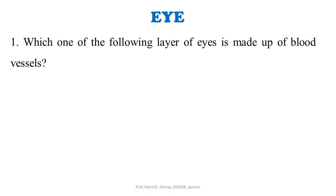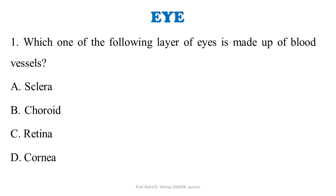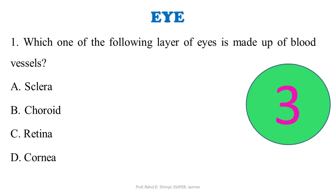The first question is: which one of the following layers of the eye is made up of blood vessels? Option A: sclera. Option B: choroid. Option C: retina. Option D: cornea. Take your own time to think. The answer is choroid.